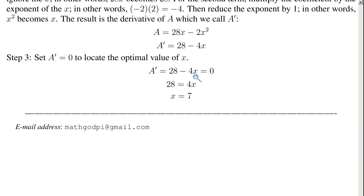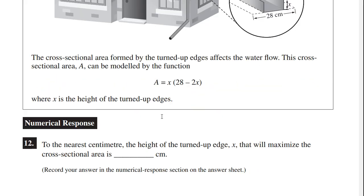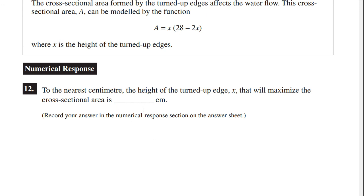So now we have 28 minus 4x equals 0. So 28 equals 4x. Divide both sides by 4, simply x equals 7. And that's the answer to our problem. Numerical response, 7 centimeters. And that's the only way.